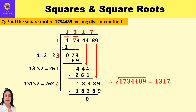Now let's take a question for better understanding. Find the square root of 1734489 by long division method. First, form pairs from the ones digit — these are called periods. The first period is 89, then 44, then 73, and then 1 as a single remaining digit. There are four periods in total. We start with the leftmost period, which is 1.